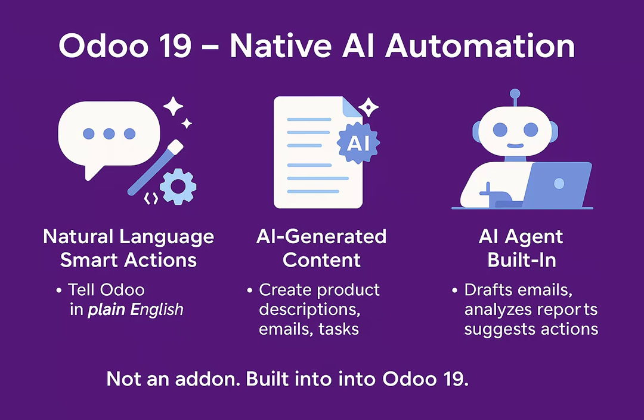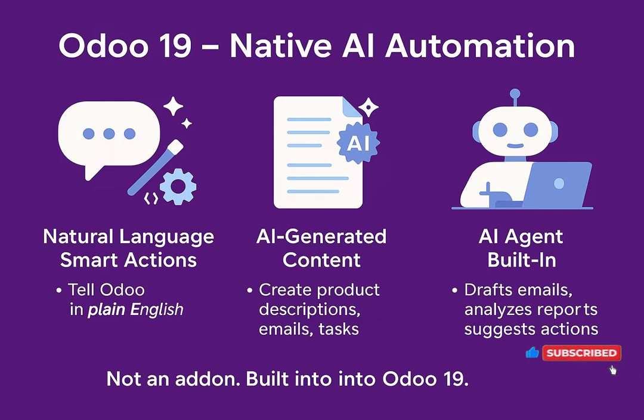AI agent is now built into Odoo. Think of it as a contextual assistant. It helps you draft emails, analyze reports, suggest actions or even remind you of important tasks. Powered by ChatGPT or Gemini, but seamlessly integrated into Odoo's interface. This is not an add-on. It's not experimental. It's built right into Odoo 19.